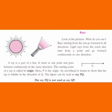A ray is a part of a line. It starts at one point and goes forward continuously in the same direction. The starting point of a ray is called its origin.